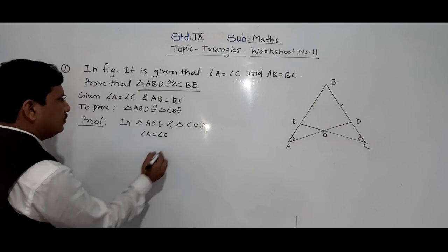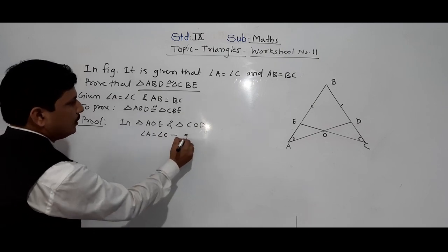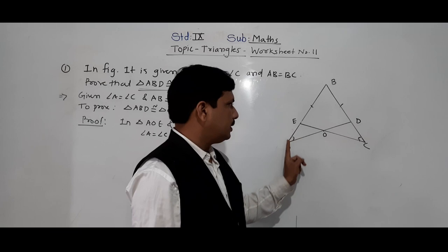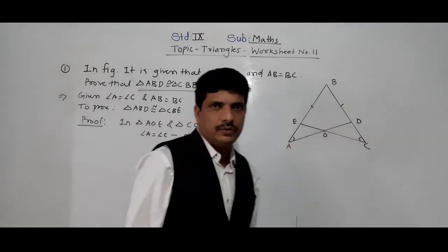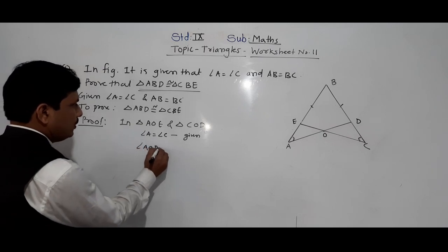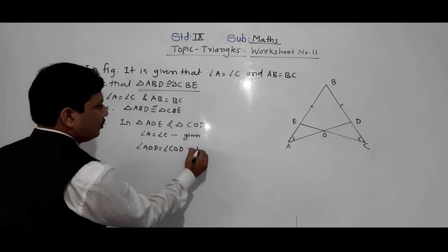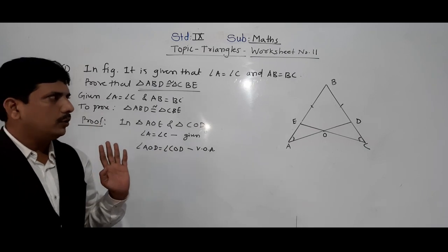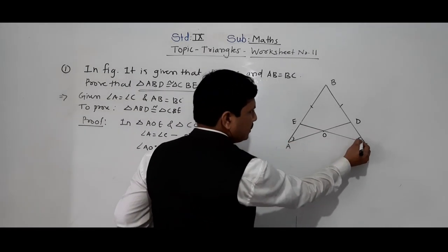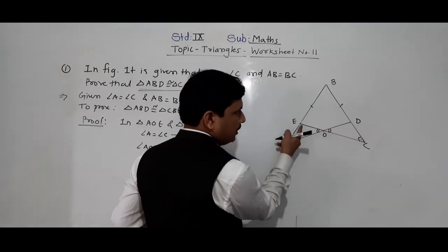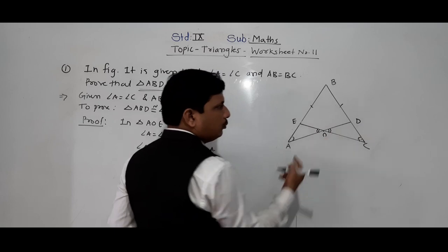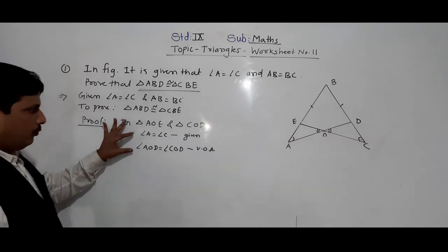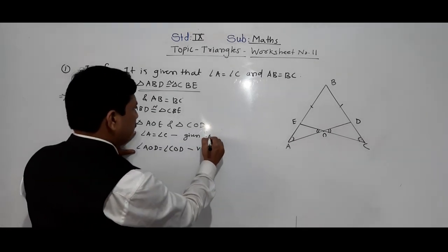First, we think about triangle AOE. Angle A and angle C are equal because that is given. Second, angle AOD is equal to angle COD because these are vertically opposite angles — vertically opposite angles are always equal. So AOD equals COD, and angle A equals angle C.